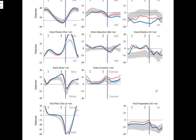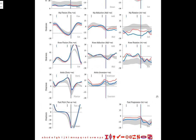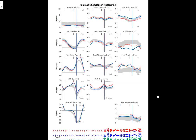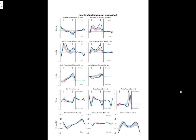So that covers the average kinematic data for each joint we've measured. On the next page we have joint kinetics — specifically joint moments.